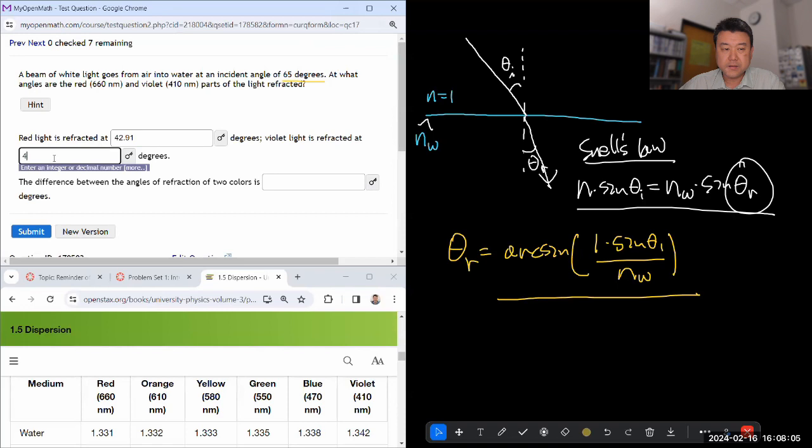Feels like 42.48. The difference is very tiny, like less than 0.5 degrees. So difference between the angles of refraction of two colors is, oh yeah, I can do that. 0.43. Hopefully that's enough for precision.